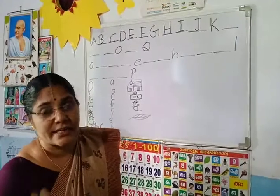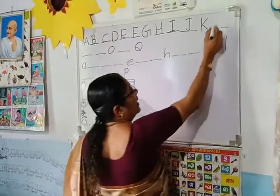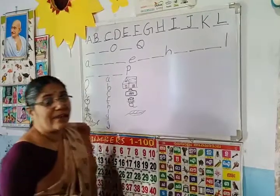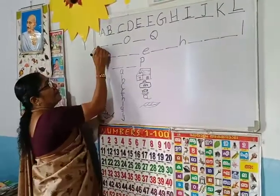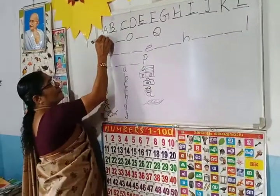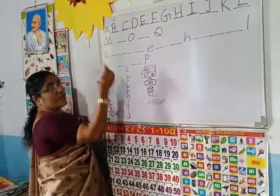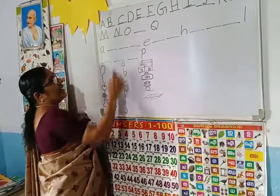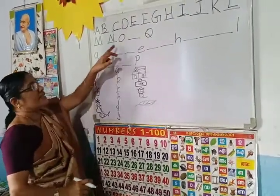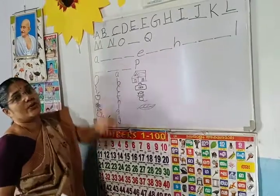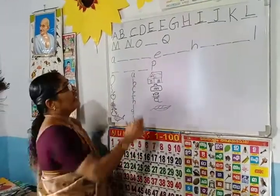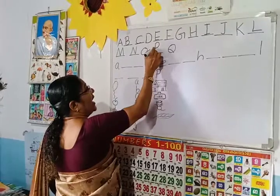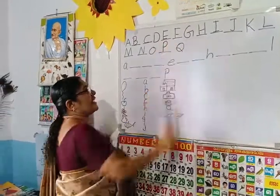After K, which letter comes? L. And after L, which letter comes? M. After M — N. And O is here, so no need to write O. O after? P. And which is this letter? Q.